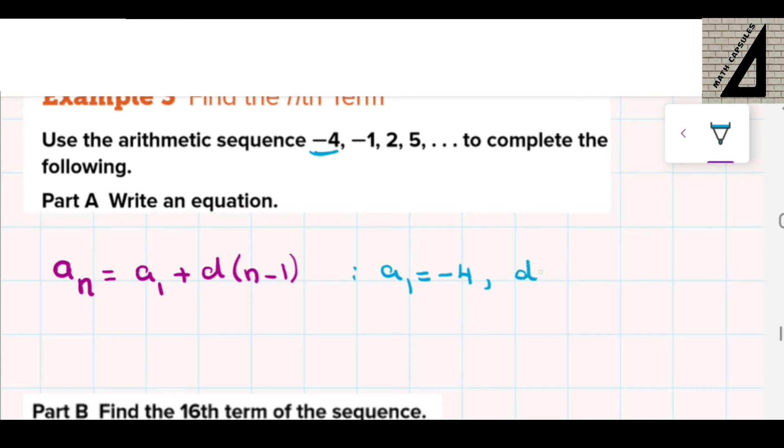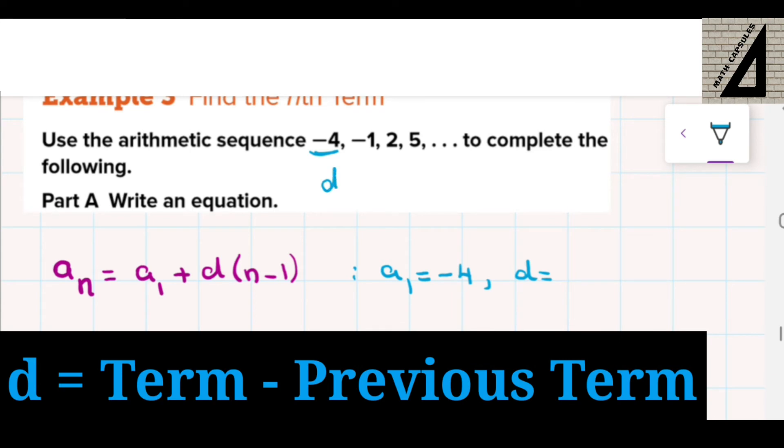And also, d is the common difference. I can find the difference by subtracting any term from the previous term. So if we subtract, for example, negative 1 minus negative 4, this will make negative 1 plus 4. This negative negative makes plus, so it will be 3. Also, if you subtract 5 minus 2, you will find it's also 3. So d equals 3.